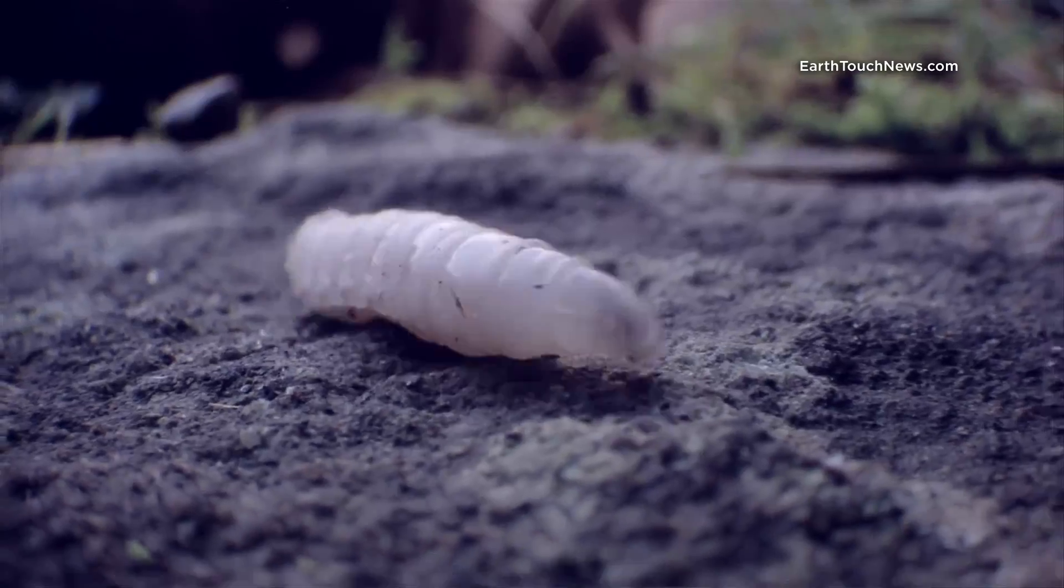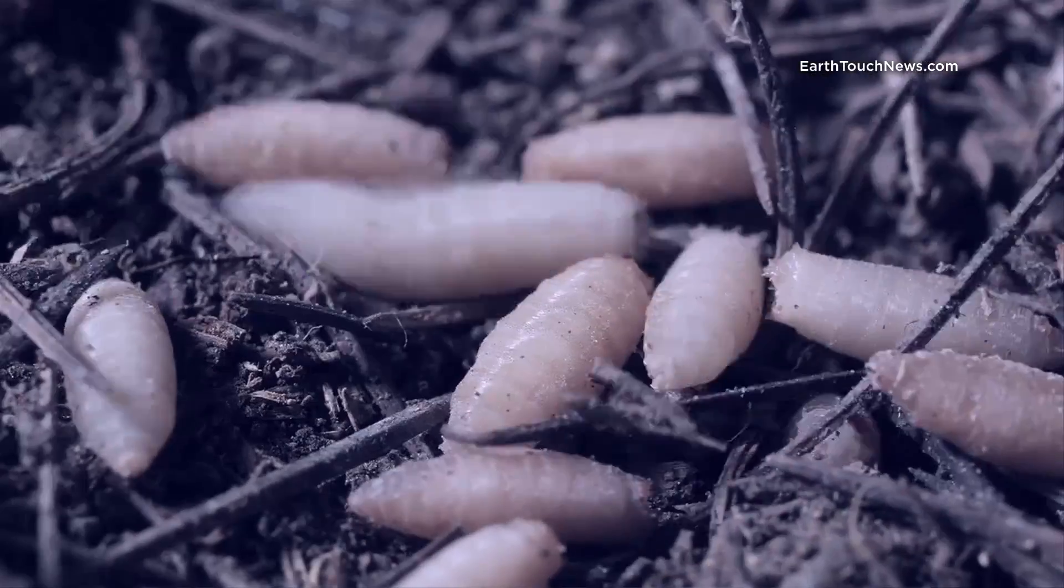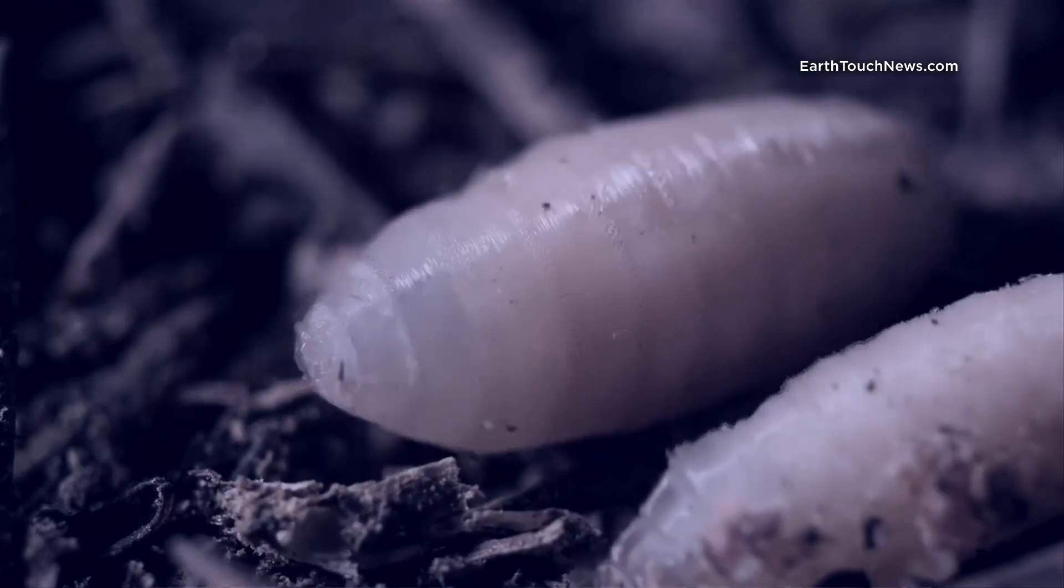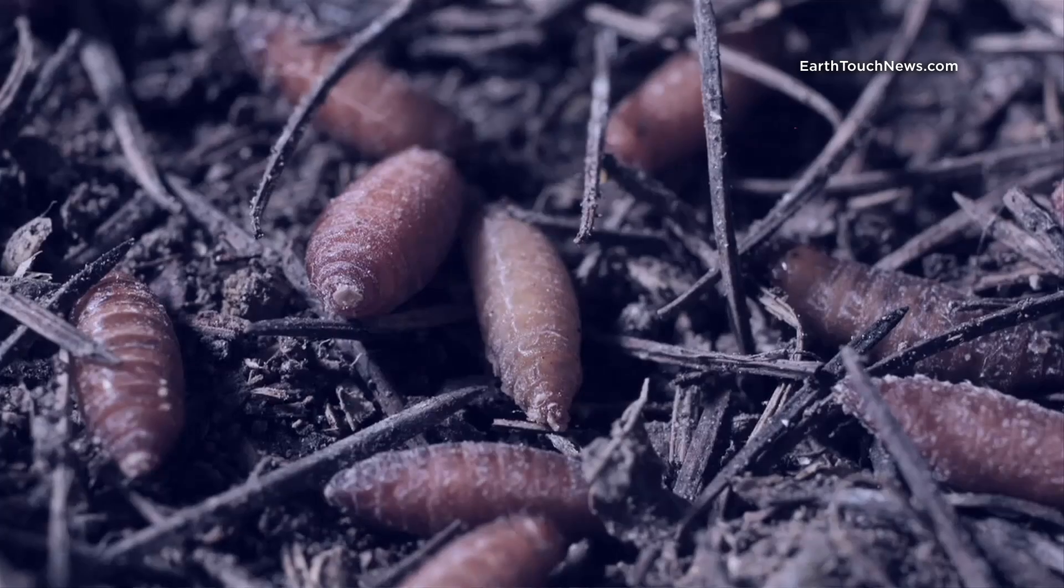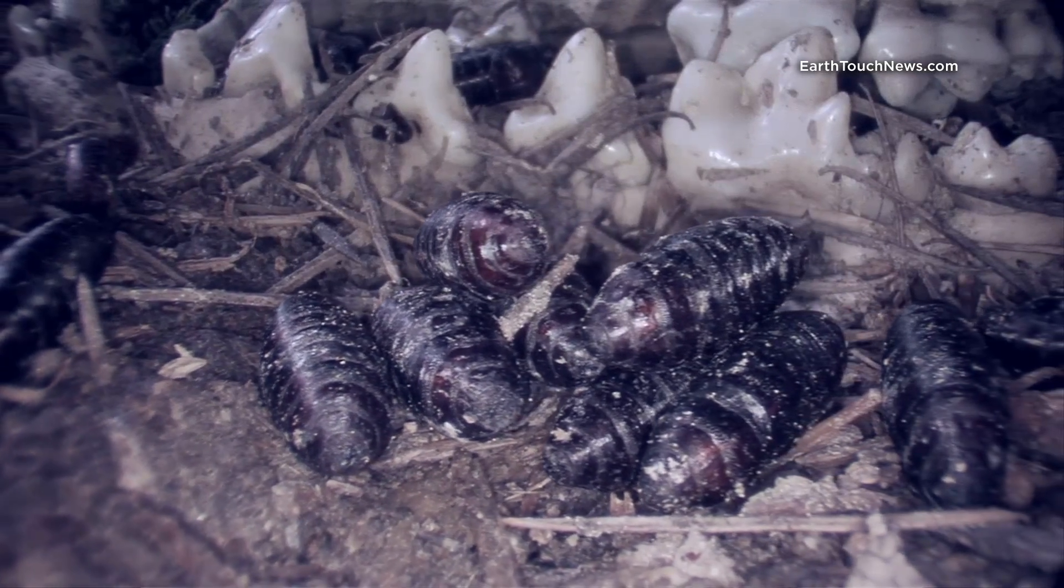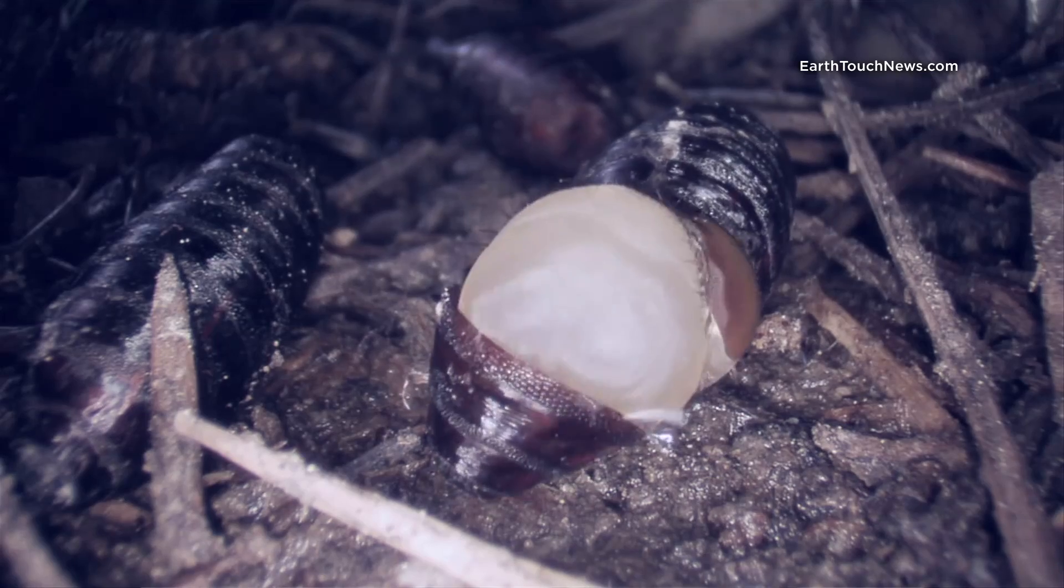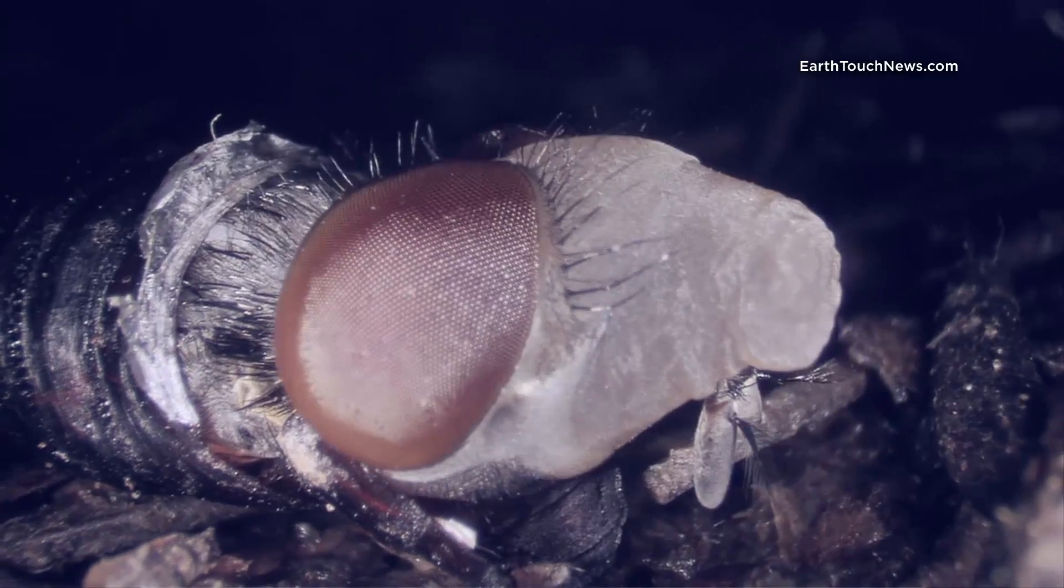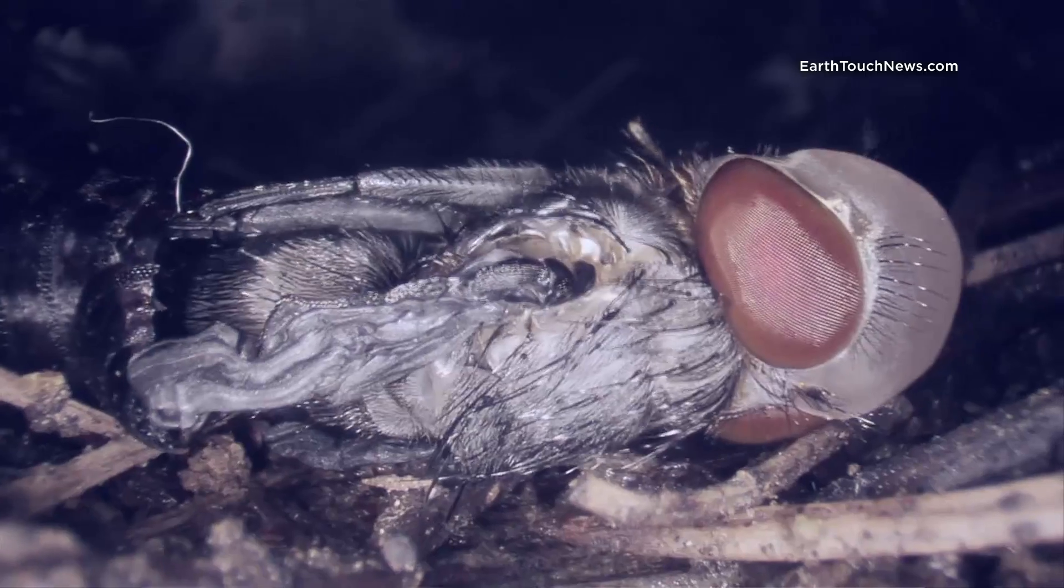And then when they finish gorging themselves, they pupate. These coffin-like casings are where the metamorphosis takes place. They go in as worms and weeks later they'll emerge as fully grown flies, starting the cycle all over again.